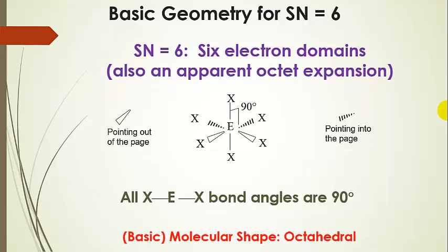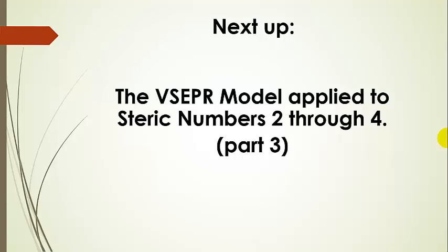Finally, octahedral geometry is for steric number six, with six electron domains, and again notice the apparent expansion of the octet. Two bonded atoms come out toward you, two go behind the plane with hash marks, and two are in the plane. All bond angles in this geometry are 90 degrees — that is the basic molecular shape octahedral. In part three, we'll cover steric numbers two through four in detail, substituting lone pairs on the central atom to draw geometries for real molecules using the VSEPR model.